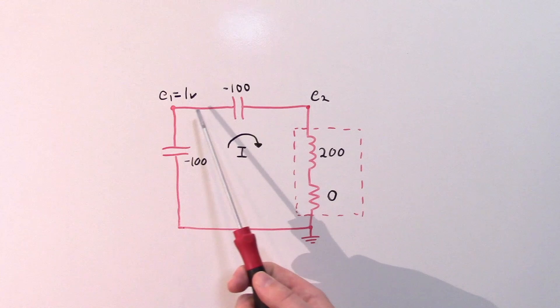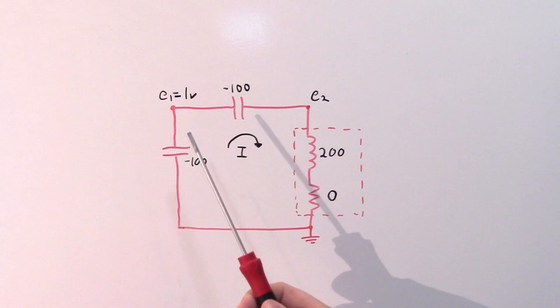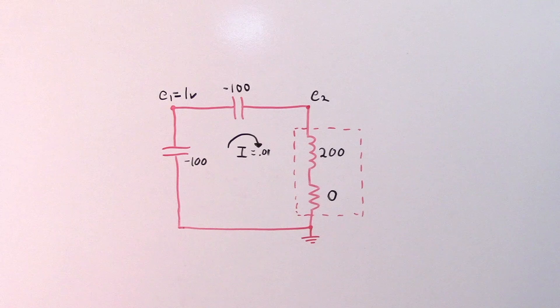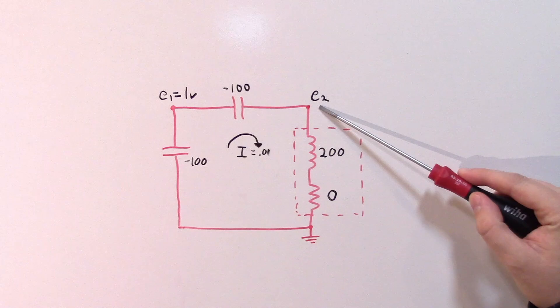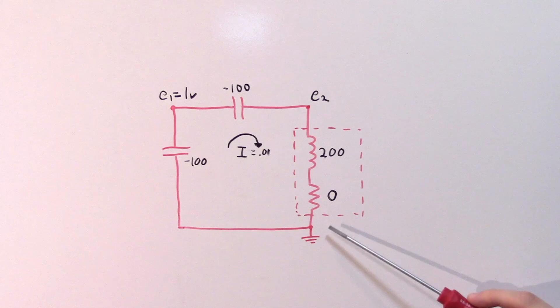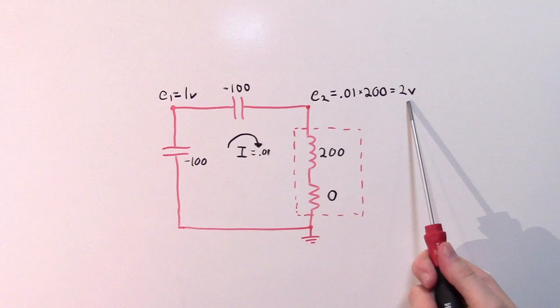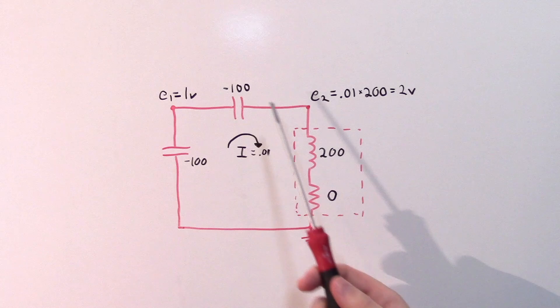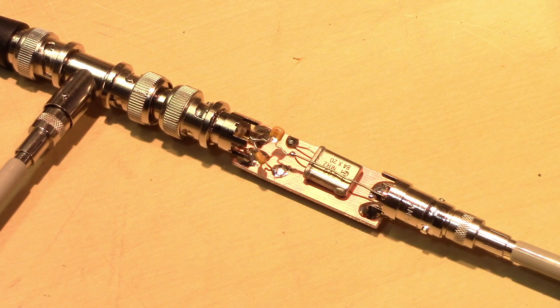Applying Ohm's law: with 1 volt across the total impedance of 0 + 200 + (−100) = 100 ohms, we get a current of 10 milliamps. The voltage at E2 is then 10 milliamps times 200 ohms, giving us 2 volts on the output. So we actually get a voltage gain here due to the interaction of negative and positive reactances in this circuit — the resonance gives us the voltage step-up.